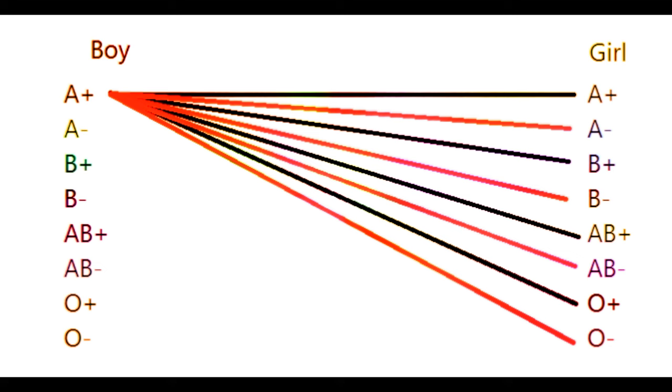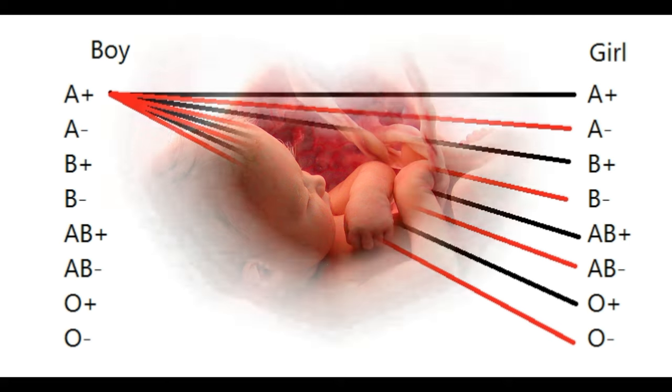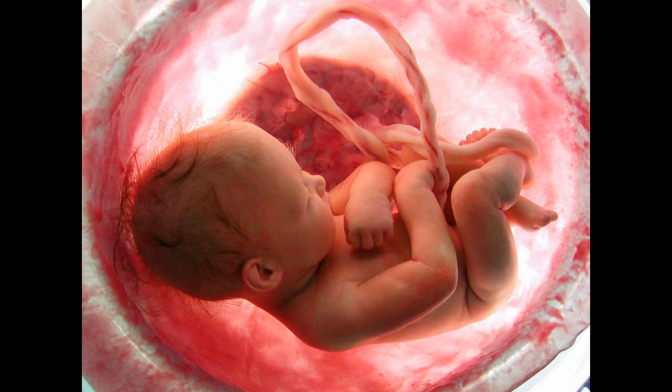If the man with positive blood group married the woman with negative blood group, the second child may be born with abnormalities due to the Rh factor of the baby inside the mother's womb.